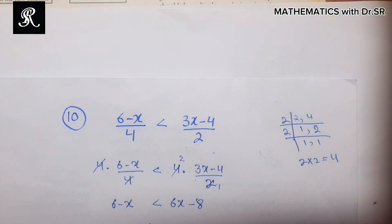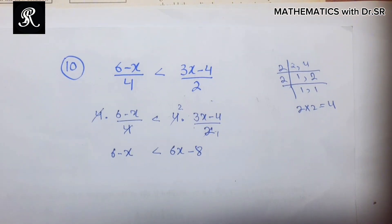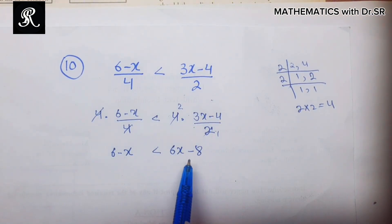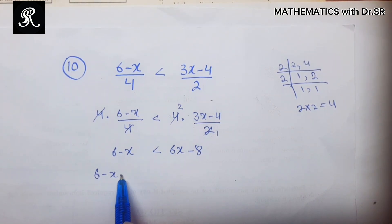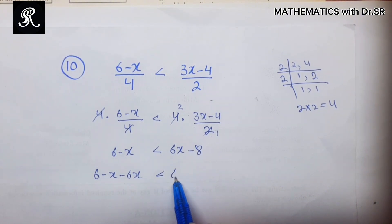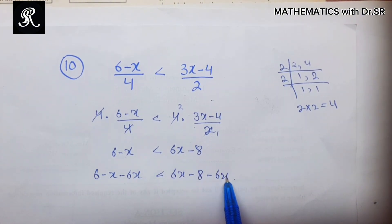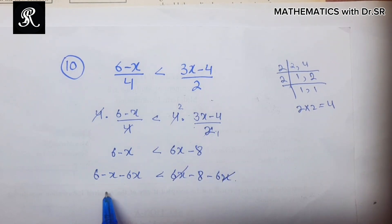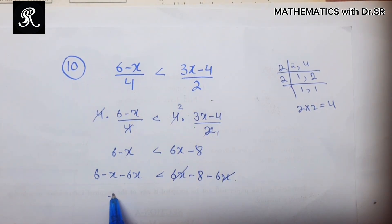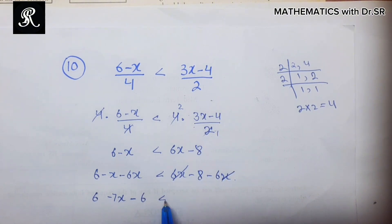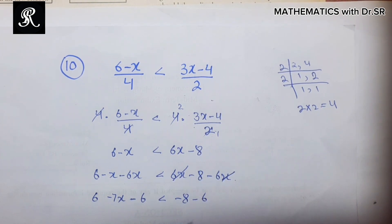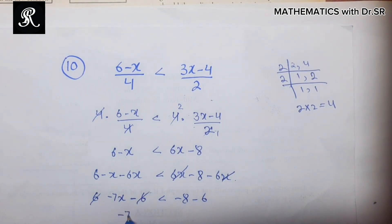We need to shift like terms to the same side. We subtract 6x from both sides, so the left side becomes 6 minus x minus 6x, which gives negative 7x, and the right side becomes negative 8. Now we shift the constant 6 to the right side by subtracting 6 from both sides; it cancels on the left and we are left with negative 7x strictly less than negative 14.